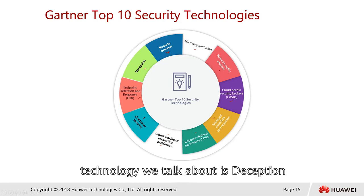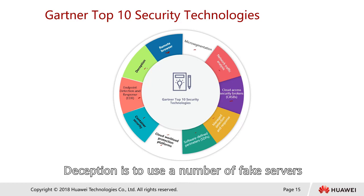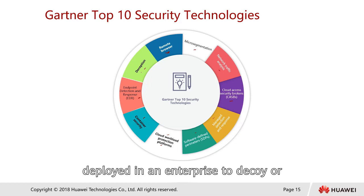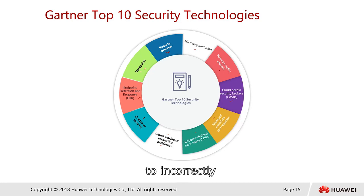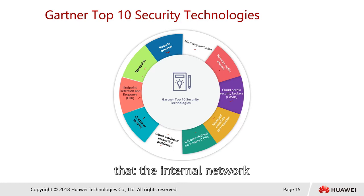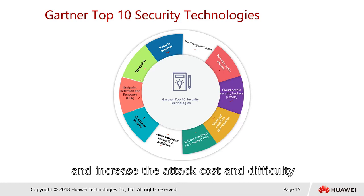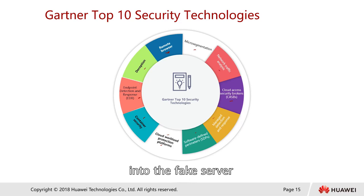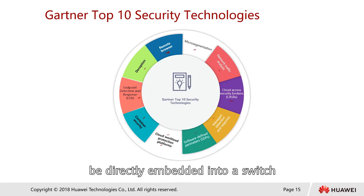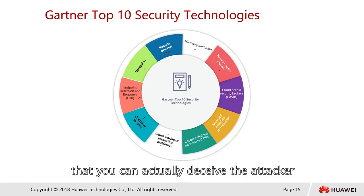The next technology is deception. Deception involves deploying a number of fake servers in an enterprise to decoy or mislead the attacker, causing them to incorrectly judge the internal network topology of the enterprise. This deceives the attacker into thinking the internal network has a different set of servers, increasing attack cost and reducing effectiveness. If an attacker intrudes into a fake server, an alarm will be generated. A fake server can even be directly embedded into a switch.